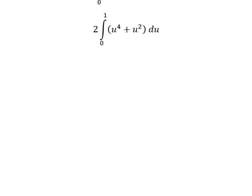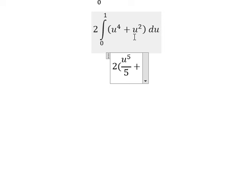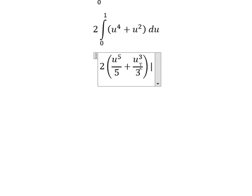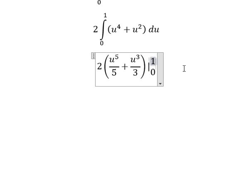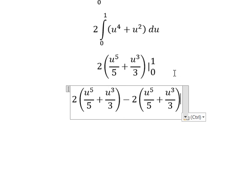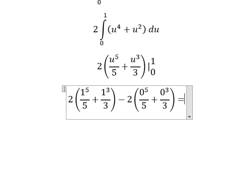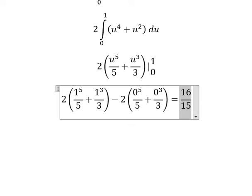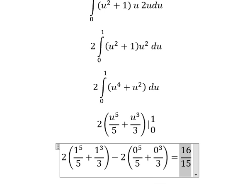Now we have the final integral. Integrating u to the power of four gives u to the power of five over five, and integrating the next term gives u to the power of three over three, evaluated from 0 to 1. Substituting the bounds and simplifying, we get the final answer: 16 over 15. Thank you for watching.